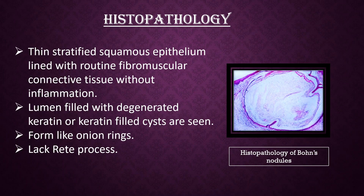Histopathology. Thin stratified squamous epithelium, lined with routine fibromuscular connective tissue without inflammation. Lumen filled with degenerated keratin or keratin pearls forming onion ring-like structures. Lack of rete pegs.